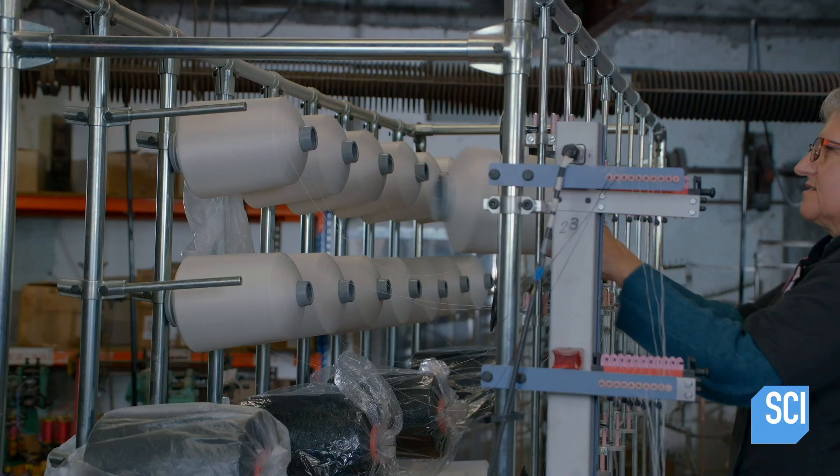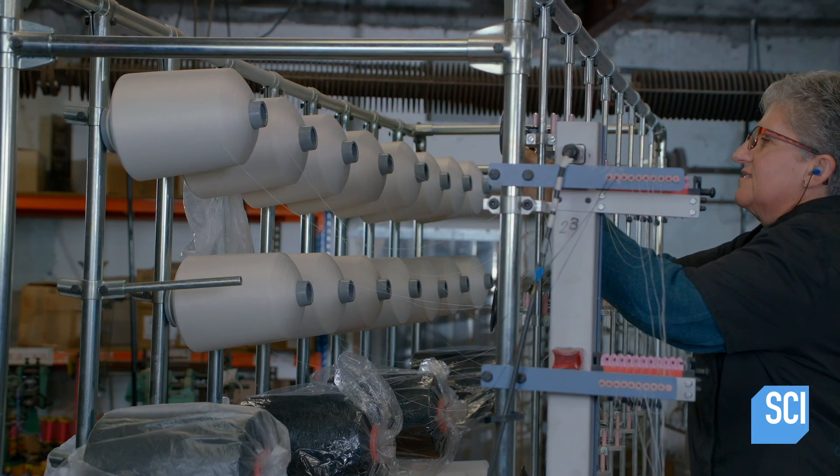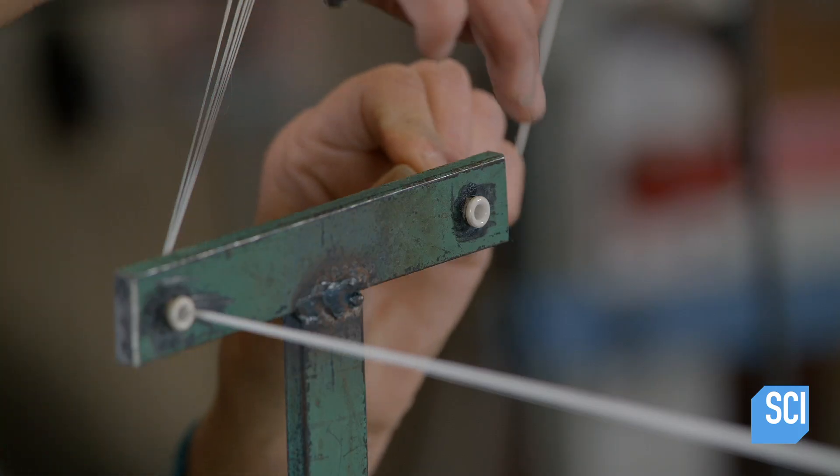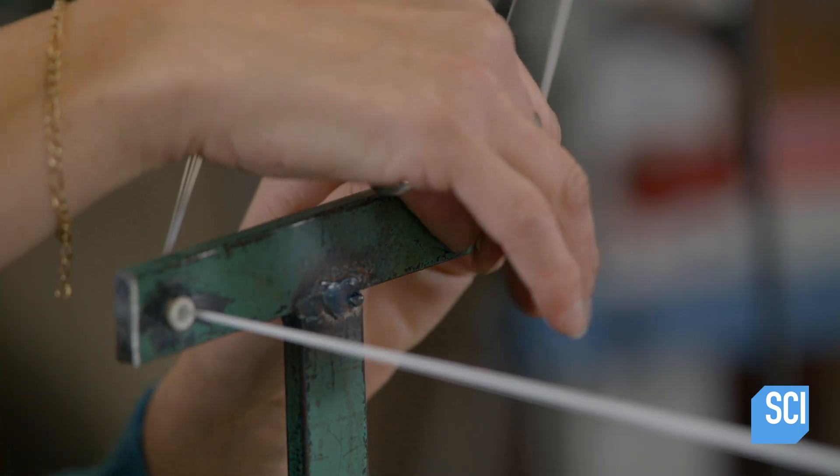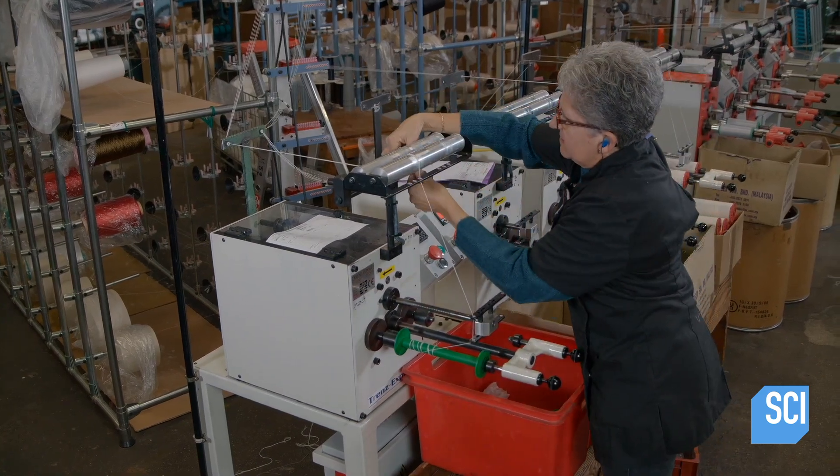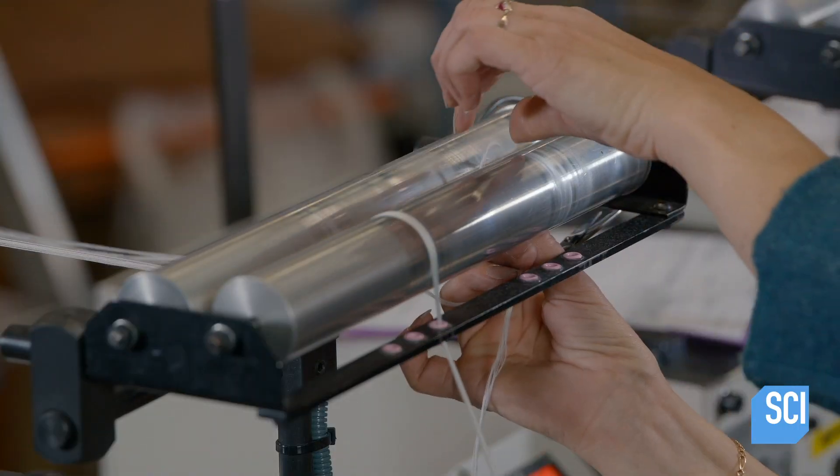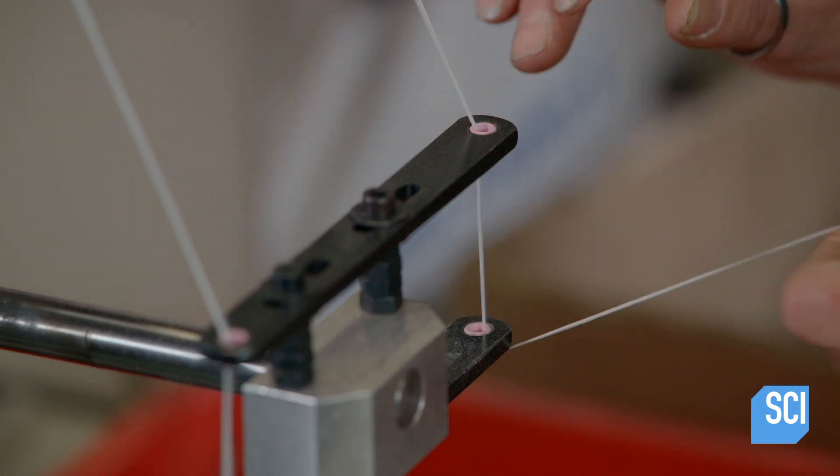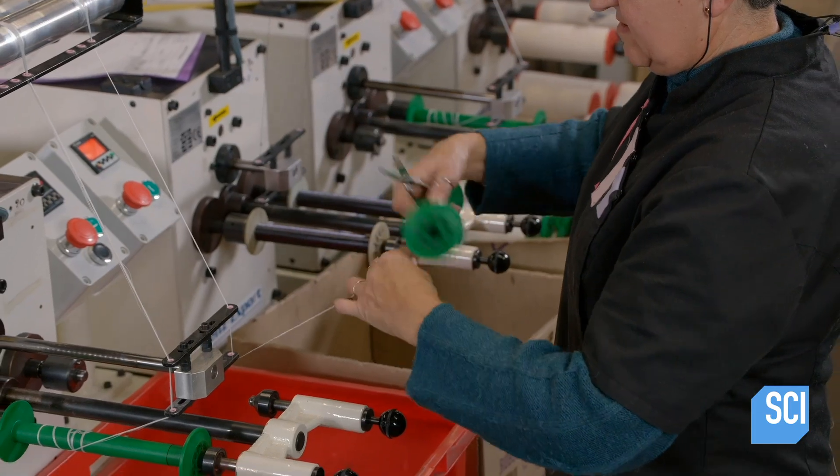A worker installs cones of fine polyester thread on what's called a creel, which feeds the bobbin winding machines. She groups the strands from eight cones and feeds them through one side of one machine and onto a bobbin. Then she groups the strands from another eight cones and feeds them through the other side of the machine onto a second bobbin.